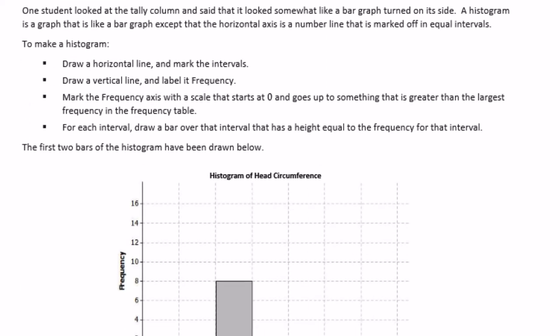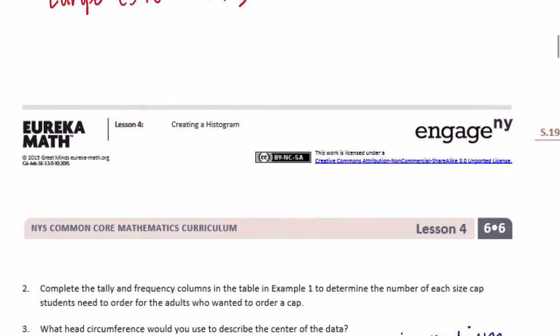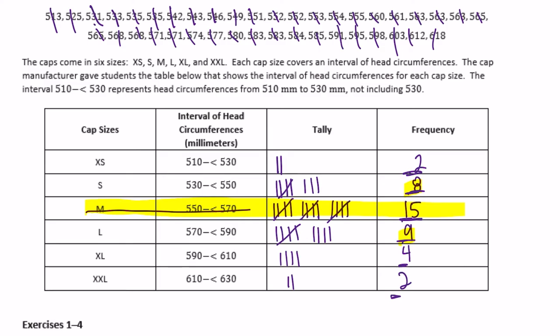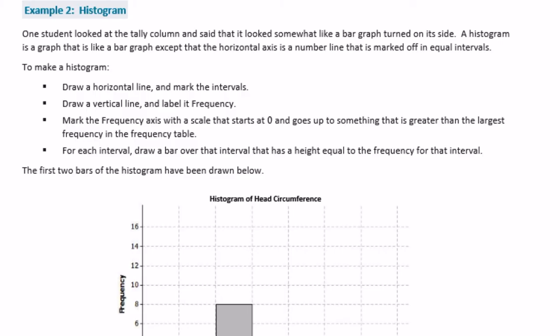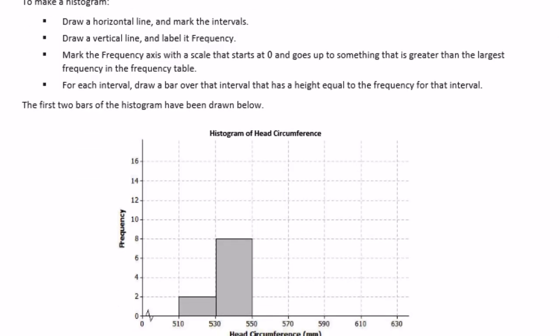Example two: histogram. One student noticed the tally column looks somewhat like a bar graph turned on its side. That is called a histogram. A histogram is a graph like a bar graph except the horizontal axis is a number line marked off in equal intervals. To make a histogram, draw a horizontal line and mark the intervals on both axes.